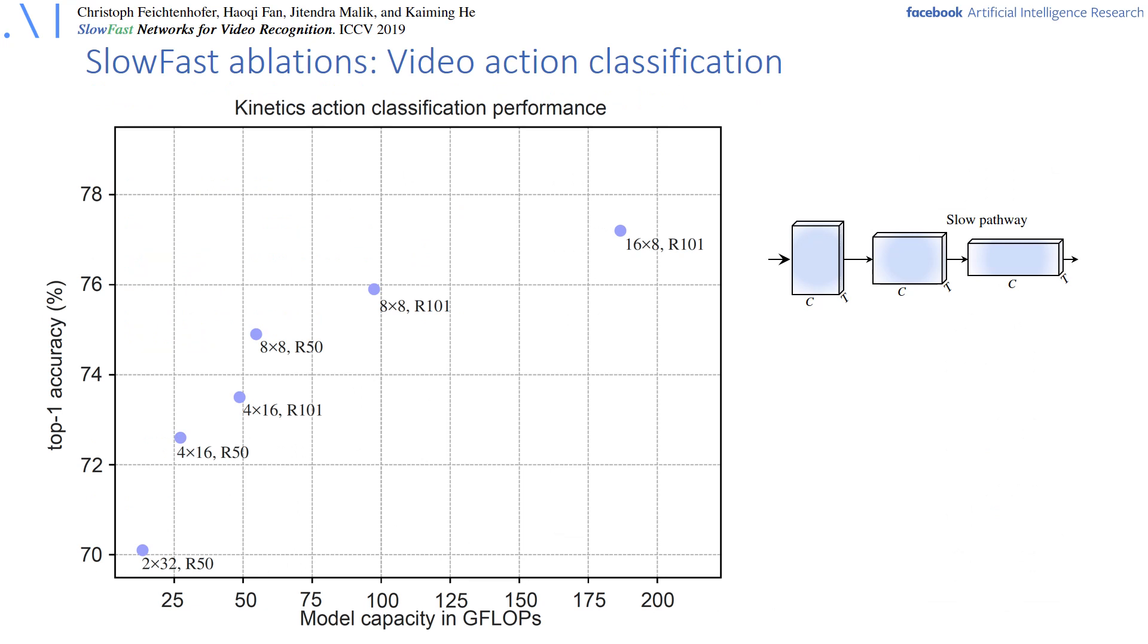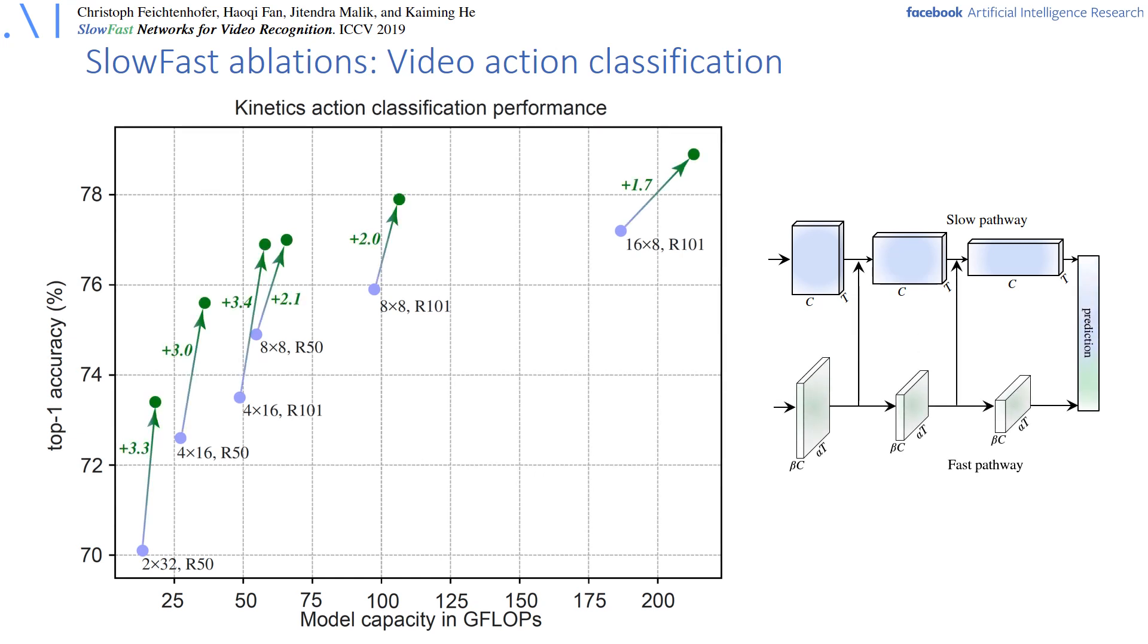In the next slide we show some ablations where we compare the slow pathway shown in blue dots against the SlowFast variant to their various models of different computational complexity. On the vertical axis we can see the recognition accuracy, and on the horizontal axis we see the model capacity and floating point operations, so the cost of the models. We observed by the green arrows that adding the fast pathway can bring significant accuracy gain of up to 3.4% top-1 accuracy at a relatively low increase of complexity since the fast pathway is very lightweight.